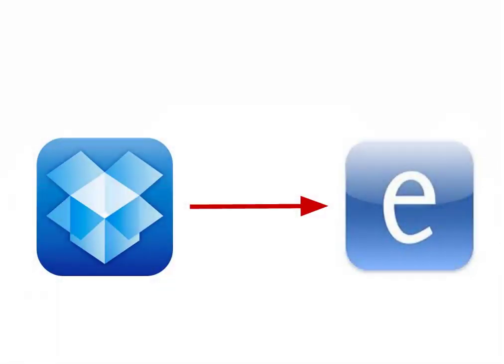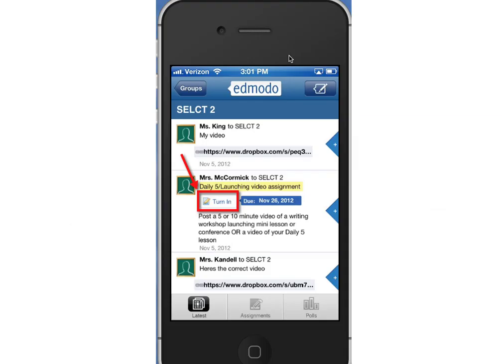Hey there. Let's take a look at how we can take a file that's in our Dropbox and turn it in or share it on Edmodo. When I go to the Edmodo app on my iPhone or iPod touch, and I go to the group that I want to share with, I can see that the teacher for this group has created an assignment which gives me the turn in option.